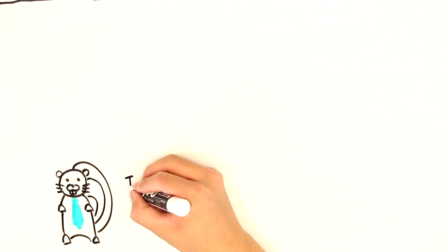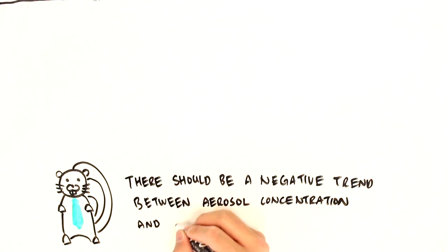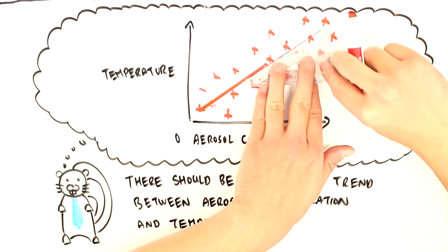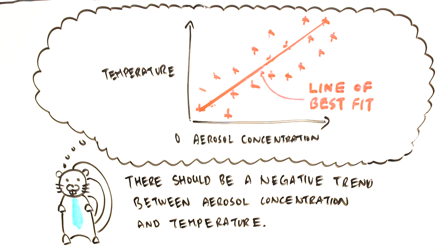But her other friend completely misunderstood. He took negative trend to mean a bad trend. And having heard bad things about global warming, he pictured the opposite relationship.